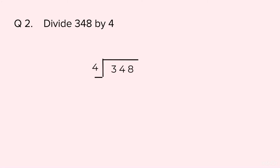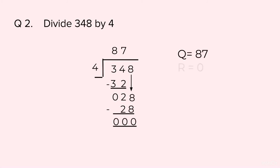Now I will quickly share the remaining solutions with you. 348 divided by 4: the quotient is 87 and the remainder is 0.